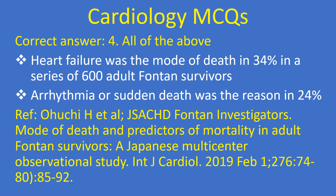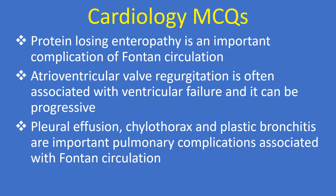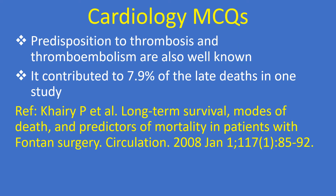Heart failure was the mode of death in 34% in a series of 600 adult Fontan survivors. Arrhythmia or sudden death was the reason in 24%. Protein-losing enteropathy is an important complication of Fontan circulation. Atrioventricular valve regurgitation is often associated with ventricular failure and can be progressive. Pleural effusion, chylothorax, and plastic bronchitis are important pulmonary complications. Predisposition to thrombosis and thromboembolism are also well known, contributing to 7.9% of late deaths in one study.